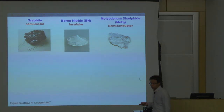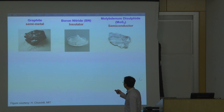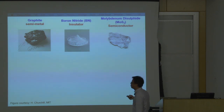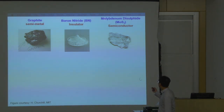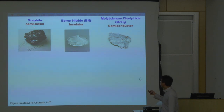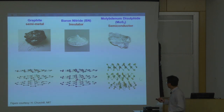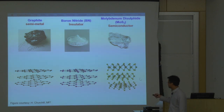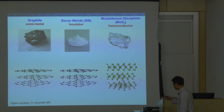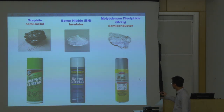To begin with, I would like to give a short introduction on two-dimensional materials. Probably many of you have heard of the development of 2D materials. These are three well-known examples in their bulk form: graphite, boron nitride, and molybdenum disulfide, or MoS2. They are very different in appearance — graphite is a semi-metal, boron nitride is an insulator, and molybdenum disulfide is a semiconductor. Although they are very different in appearance, they all share the same layer structure if you zoom in to see the atoms. The atoms are bonded strongly within the same layers, but the layers are coupled weakly by Van der Waals interactions.